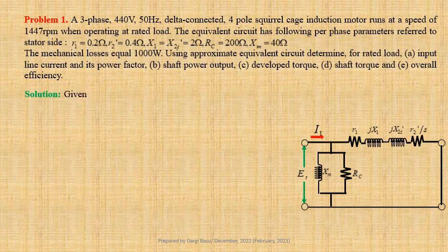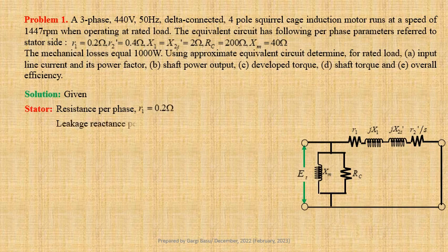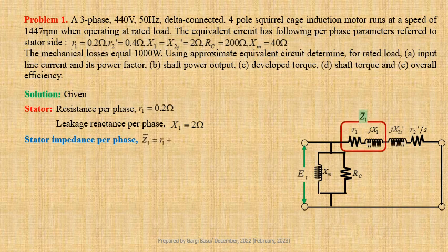For the stator winding, resistance per phase R1 = 0.2 Ω and leakage reactance per phase X1 = 2 Ω. The expression for stator impedance per phase: Z1 = R1 + jX1 = 0.2 + j2 Ω.